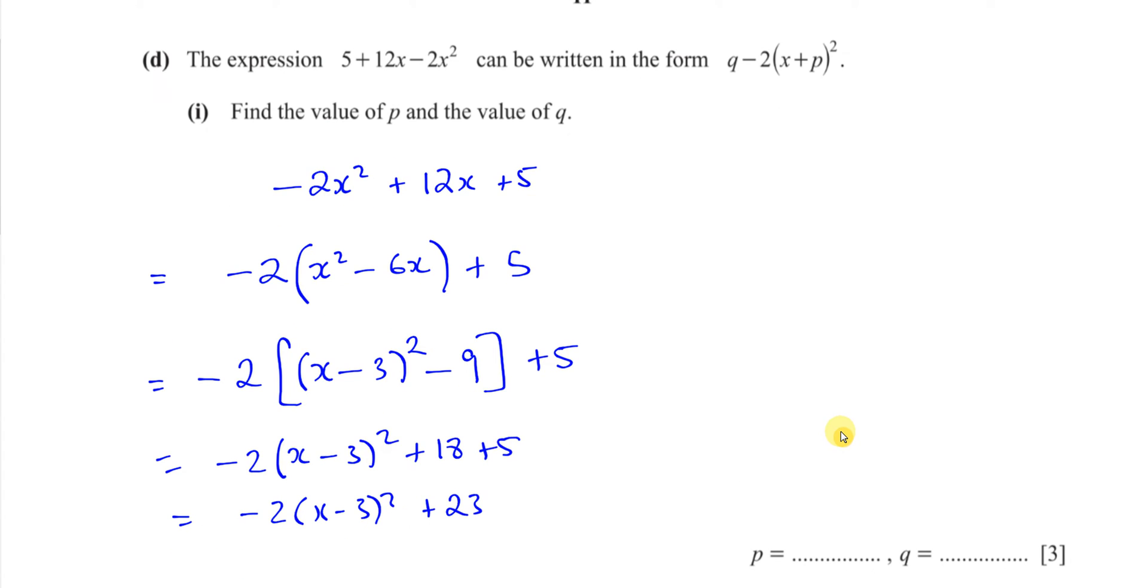So now we can write it in this form. 23 - 2(x + p)². Sorry. I'll write it in this form. (x - 3)². (x - 3)². That's exactly what this gives you. 23 - 2(x - 3)².